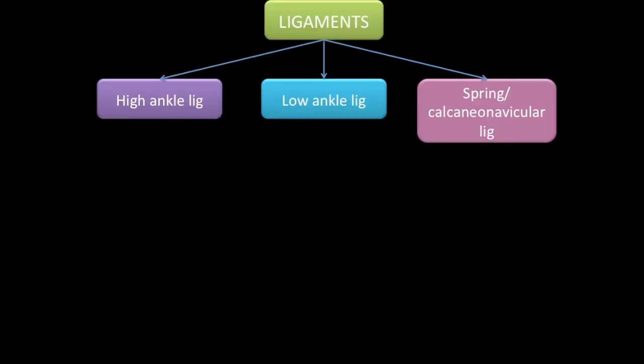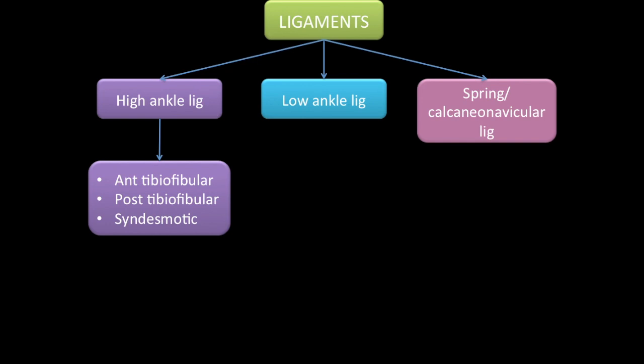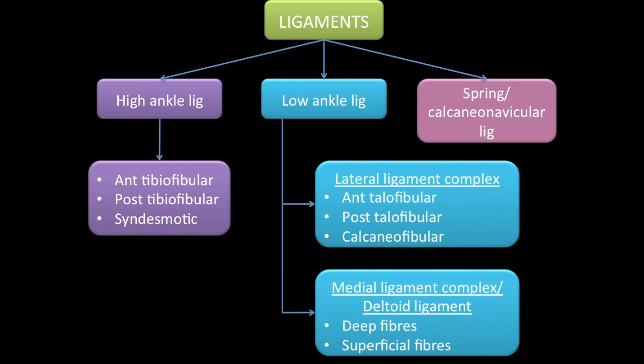The ligaments in the ankle can be divided into high ankle and low ankle ligaments and the spring or calcaneo-navicular ligament. High ankle ligaments consist of anterior and posterior tibio-fibular and syndesmotic ligaments. It is important to identify injuries to the high ankle ligaments. Low ankle ligaments consist of lateral and medial ligament complexes. Laterally, you have the anterior and posterior talofibular ligaments and calcaneo-fibular ligament.